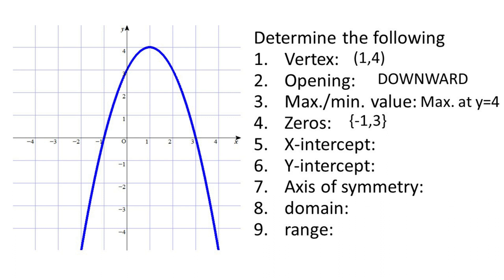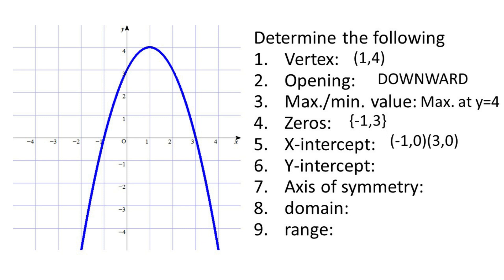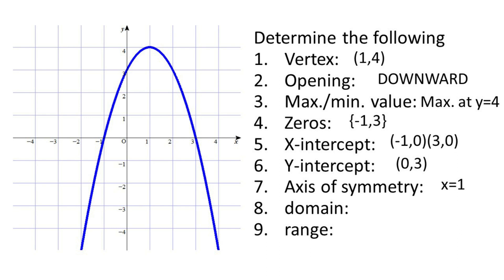In identifying the x-intercept, we identify the coordinates where the graph and the x-axis intersect. So that is (−1, 0) and (3, 0). The y-intercept is the intersection of the graph and the y-axis, which is at (0, 3). The axis of symmetry passes through the vertex, so the axis of symmetry is X equal to H, or X equal to 1 — the x-coordinate of our vertex.